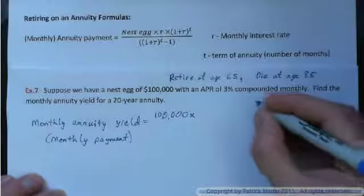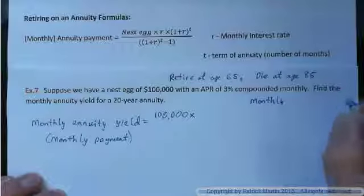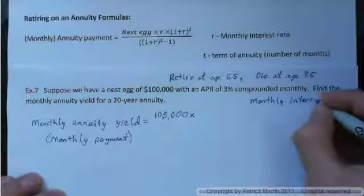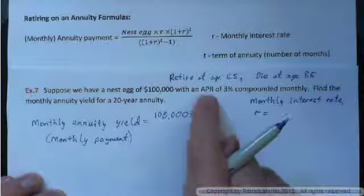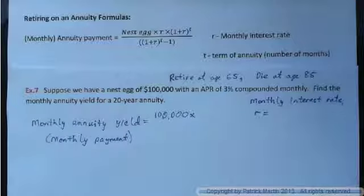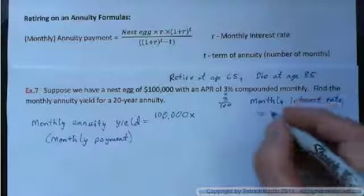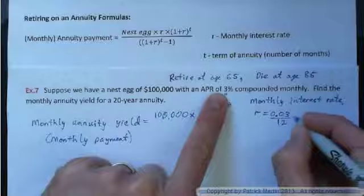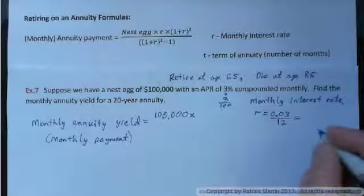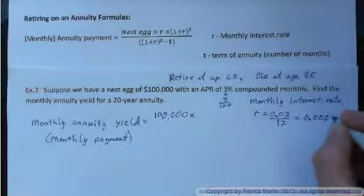The monthly interest rate R equals the APR divided by 12. We're not using 3% directly — that's the annual percentage rate. So 3% is 0.03 as a decimal, and dividing by 12 gives us the monthly interest rate. Put that in the calculator and you should get 0.0025.